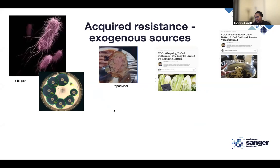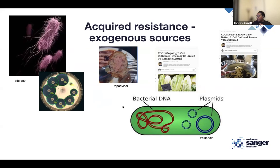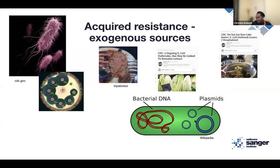Bacteria can also acquire resistance through horizontal gene transfer — getting genes from other bacteria. Plasmids are autonomous genomic molecules separate from the chromosome. They're the powerhouse of antimicrobial resistance genes and virulence genes, including toxin genes. There are three main ways bacteria can acquire resistance genes: transformation, transduction via phages, and conjugation via plasmids.